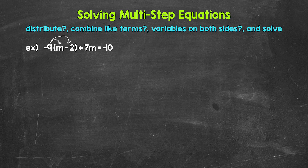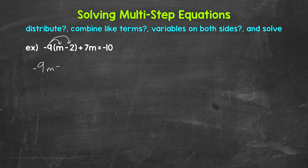Keep in mind, use the sign that is in front, so that is negative nine being distributed. Negative nine times m gives us negative nine m. Then negative nine times negative two gives us positive 18 — remember, a negative times a negative equals a positive. So we have plus 18, and then we bring down the rest of the equation: plus seven m equals negative 10.